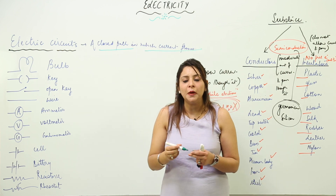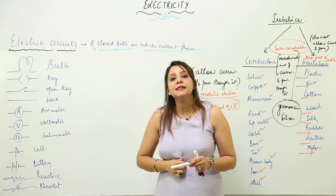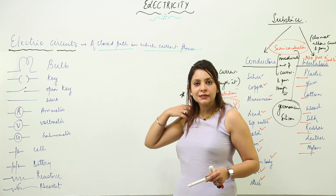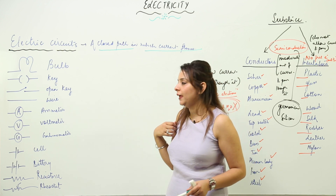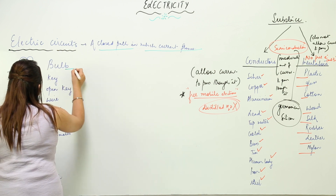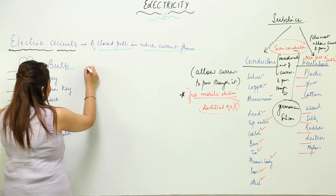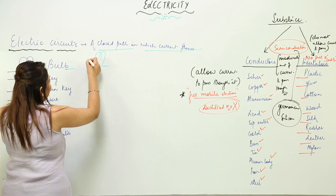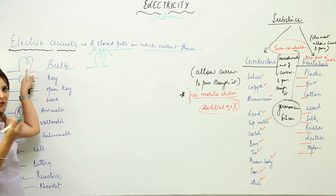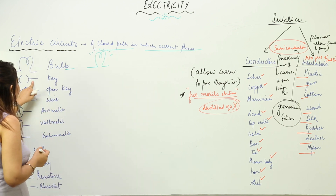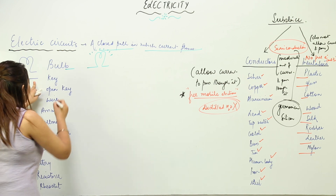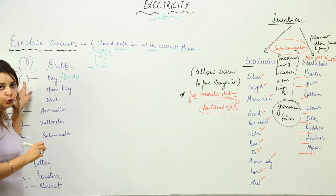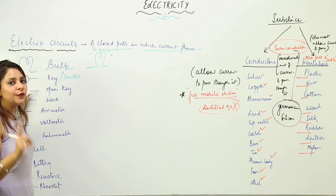An electric circuit is a closed path in which current flows. Whenever we draw a circuit, we use symbols for the components. To denote a bulb, you draw it like this, and when the bulb is glowing, you put small lines on it. Second is the key, which you can also call a switch. A closed switch means the circuit is complete and current will flow.